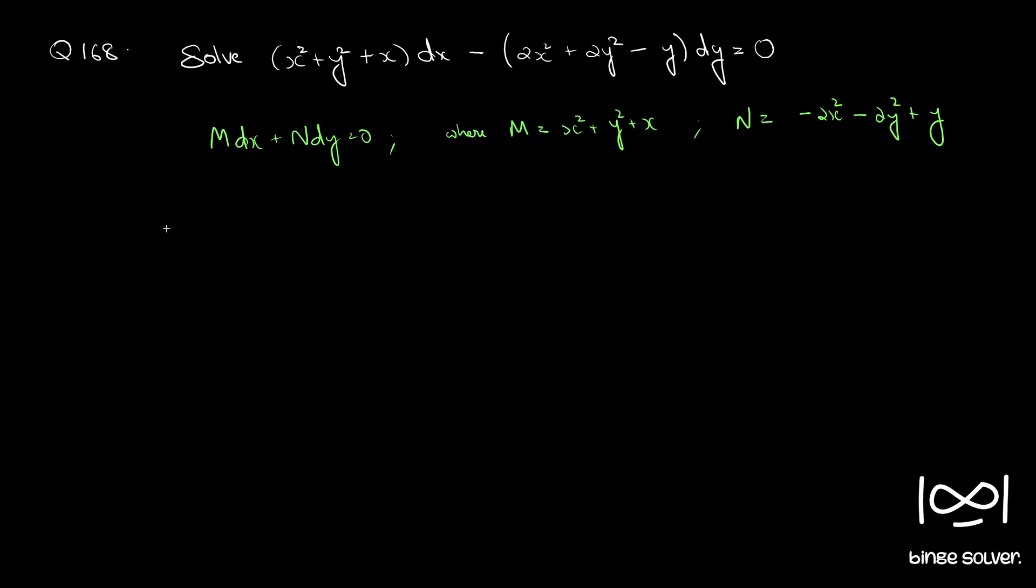The first step is to check whether the given differential equation of this form is exact. To check that, we use the necessary and sufficient condition ∂m/∂y equal to ∂n/∂x. Here, you can easily notice that ∂m/∂y is 2y and ∂n/∂x is minus 4x, which is not equal. It is not exact.